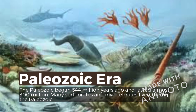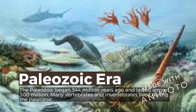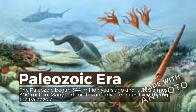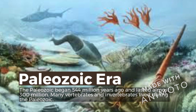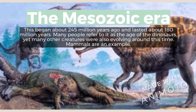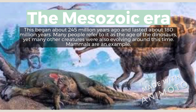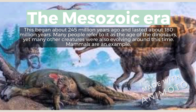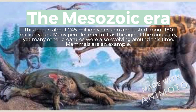The Paleozoic Era lasted beginning 544 million years ago and lasted almost 300 million years. Many invertebrates and vertebrates lived and evolved during the Paleozoic. The Mesozoic Era began about 245 million years ago and lasted about 180 million years. Many people refer to it as the age of dinosaurs, yet many other creatures were also evolving around this time — mammals are a good example.